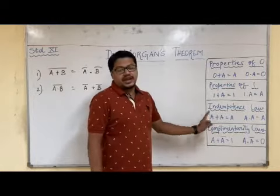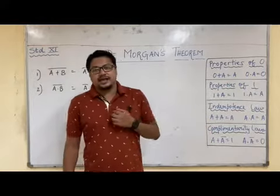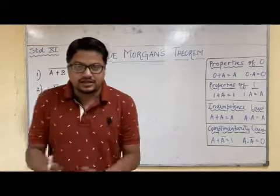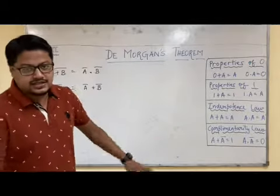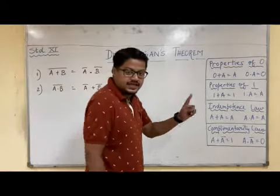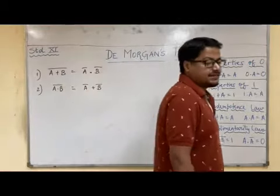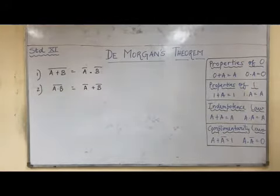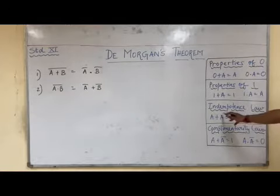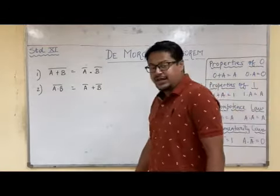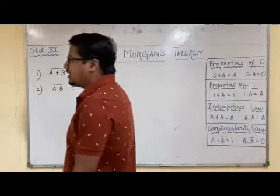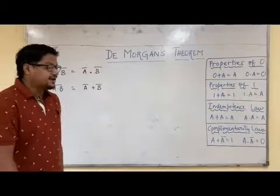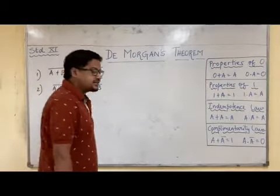Very important property: A plus A — it is not 2A; this is not mathematics. So A plus A is A. Similarly, A dot A — it is not A squared as per mathematics. A dot A is A. These laws are called the Idempotence law. I repeat: Idempotence law — A plus A is A, and A dot A is A.